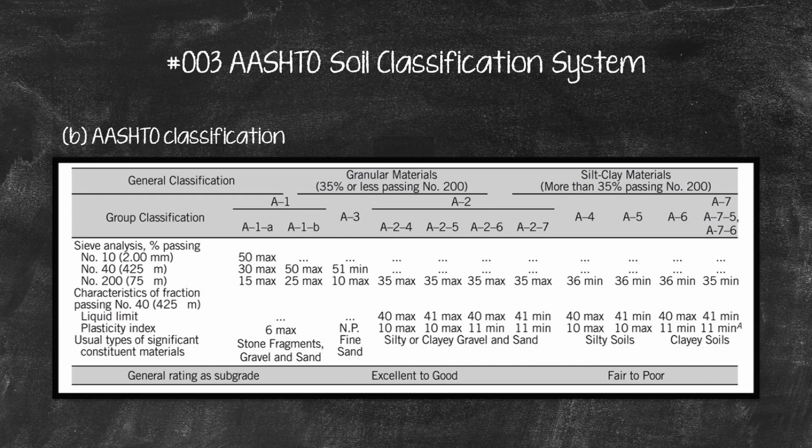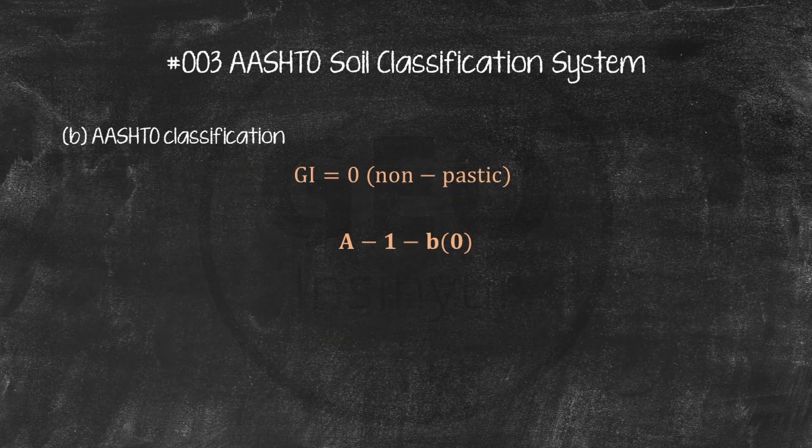B. The percent passing the number 200 sieve is 4.1, so it is a granular material. The percent passing the number 10 sieve is 70.2, and the number 40 sieve is 49.8, so the category is A1B. The GI for A1B is 0, so the classification is A1B, 0.